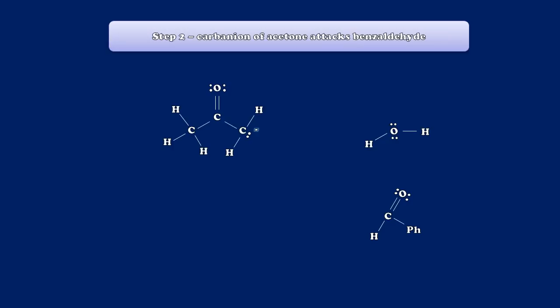In step two, the carbanion that's been created is going to attack the most electrophilic thing it can find. So let's bring that benzaldehyde molecule closer. We know where the most nucleophilic site is. Now, where's the most electrophilic site in this system? It's right there on the benzaldehyde. So we're going to have an exchange of electrons. And in doing so, we're going to create a new tetrahedral intermediate.